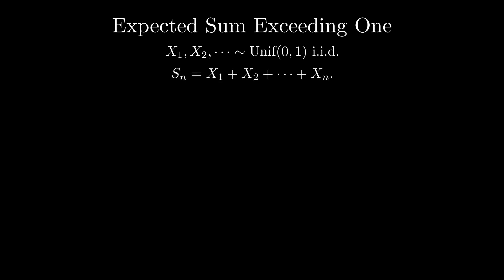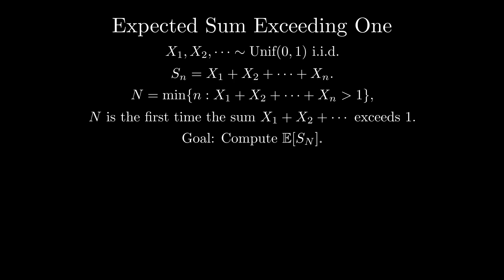Define Sn as the cumulative sum of the first n variables. Now, let big N represent the first time the cumulative sum exceeds 1. In other words, big N is the minimum value of n such that Sn is greater than 1. Our goal is to compute the expected value of S big N.